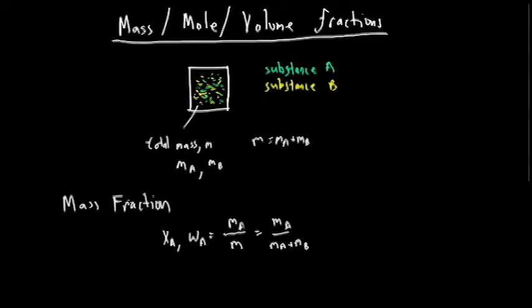And of course, we can also define another quantity, the moles. There's also moles. Remember moles, Avogadro's number? So the total moles is going to be N, and the quantity moles A, substance A will be NA, and for substance B will be NB.